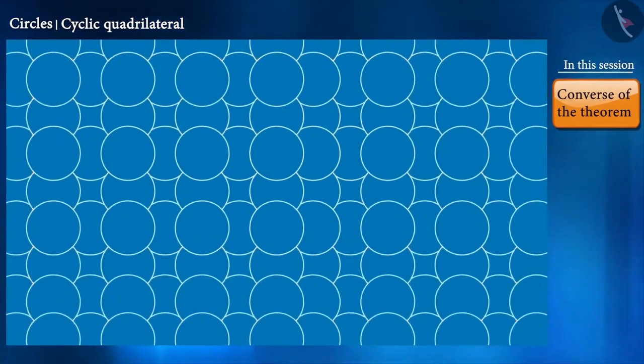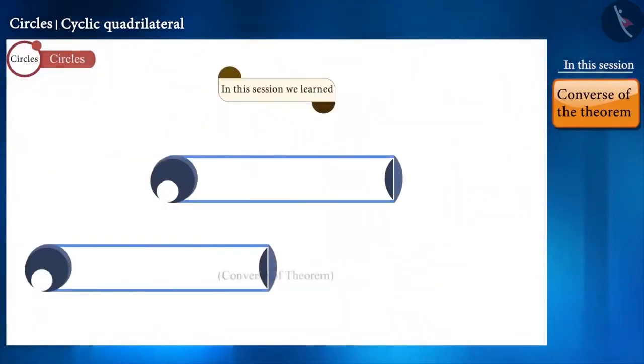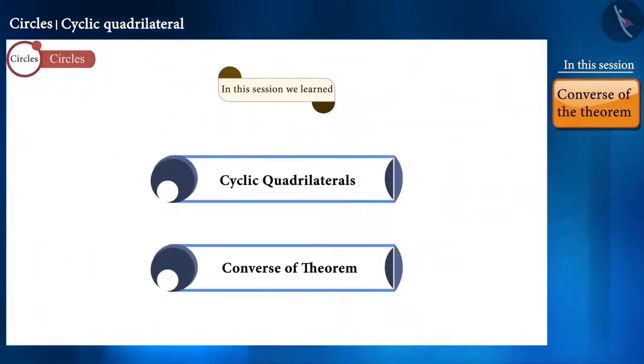That is it for this session. Today, we have proved that if the sum of a pair of opposite angles in a quadrilateral is 180 degrees, that quadrilateral is cyclic.